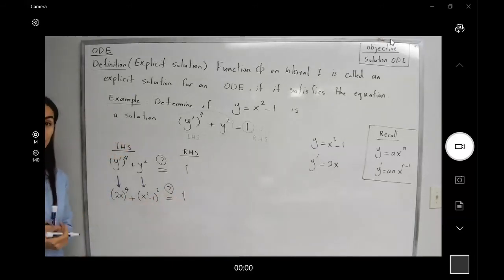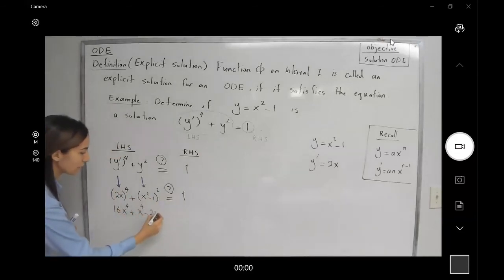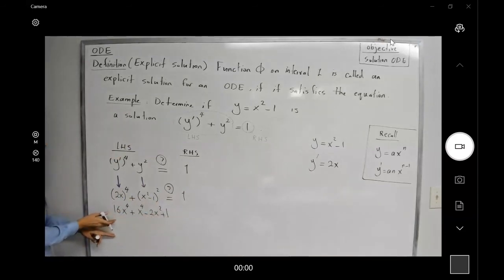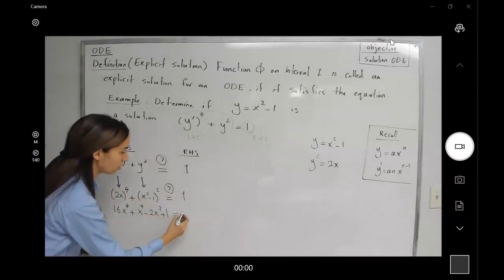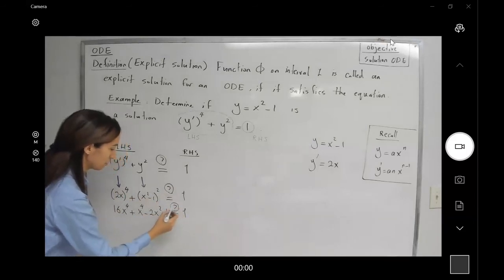We need to check if that's true. Here you have 2⁴, which is 16, times x⁴, plus (x⁴ - 2x² + 1). This is your left-hand side. On the right-hand side, you only have a constant.